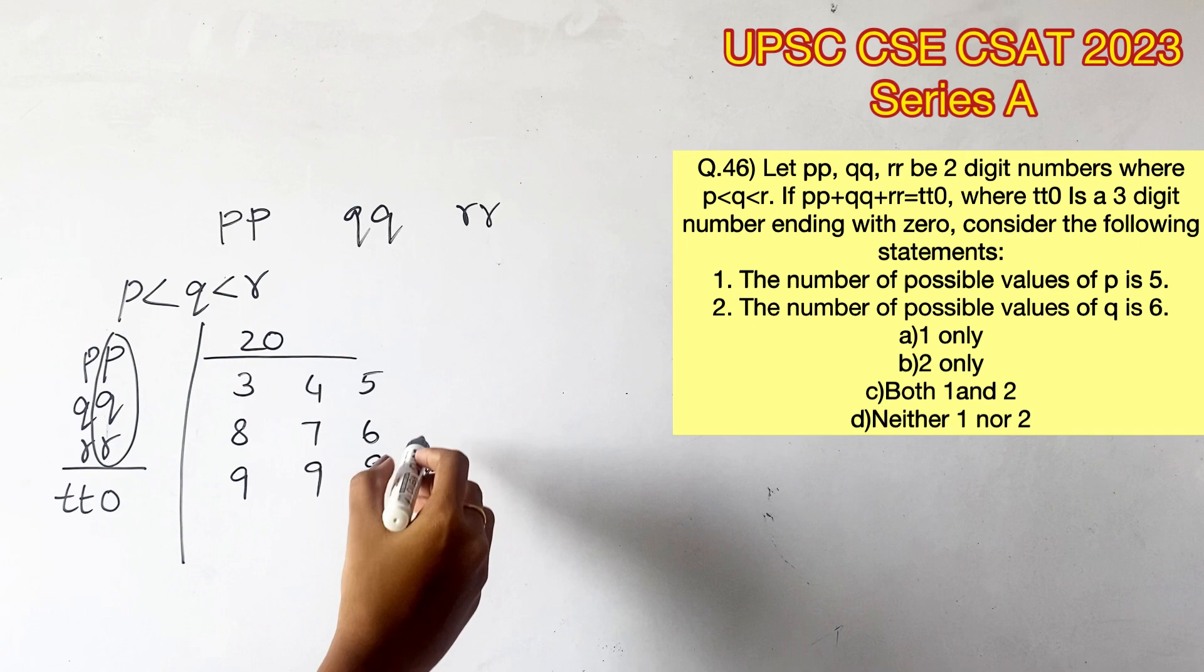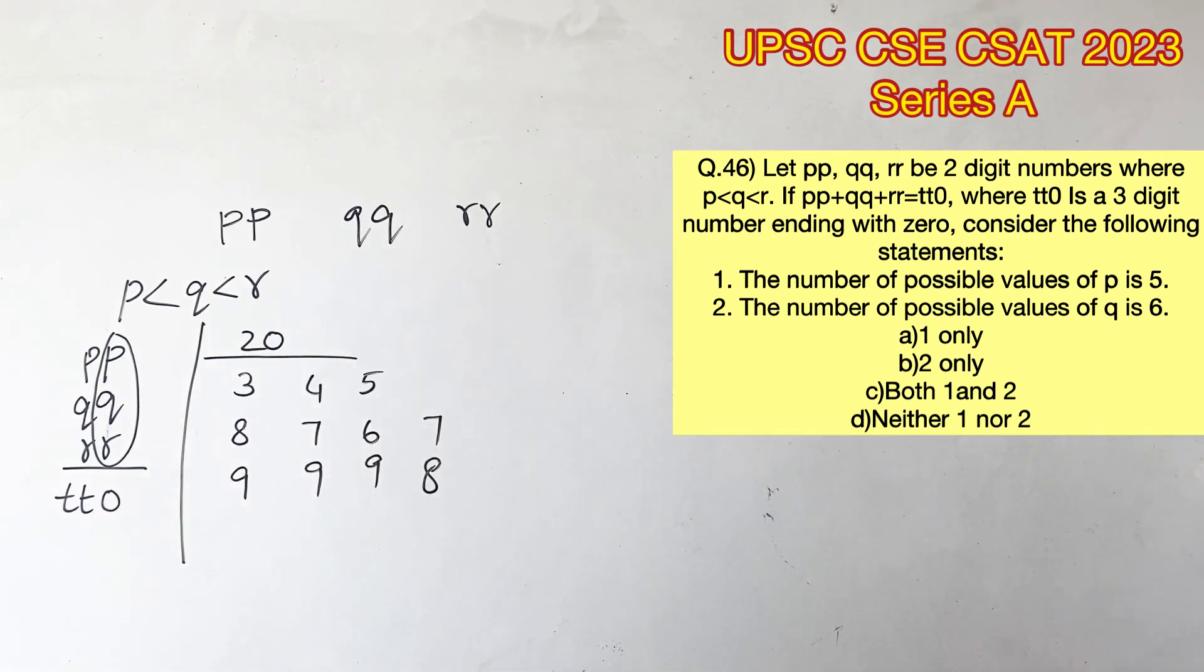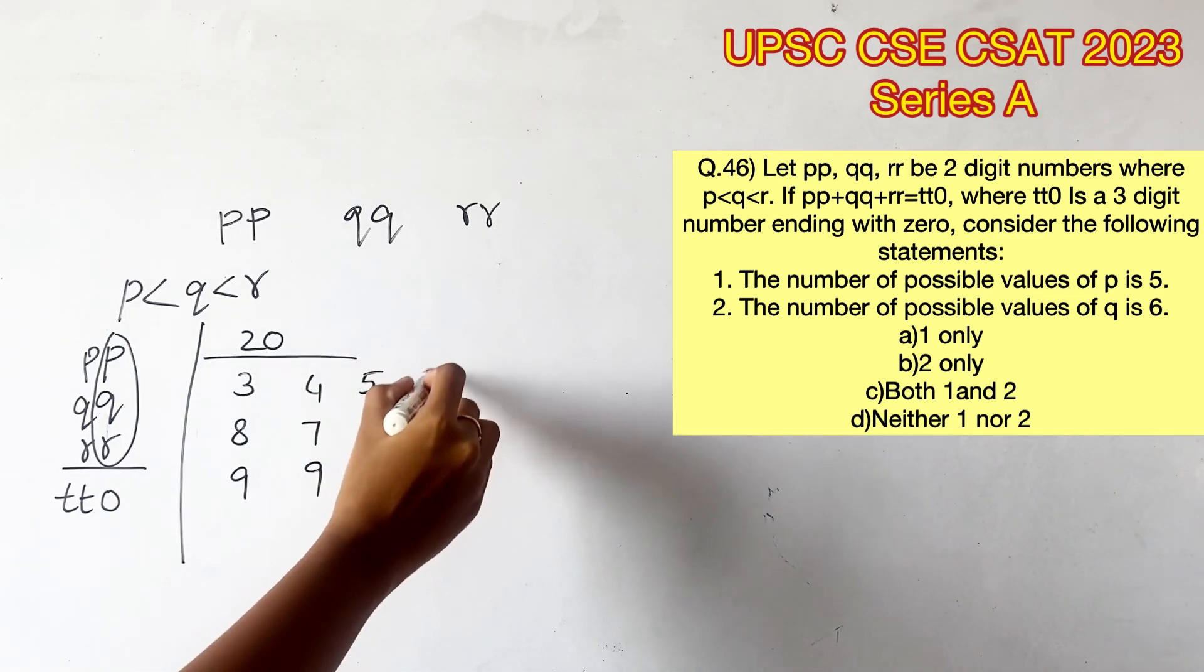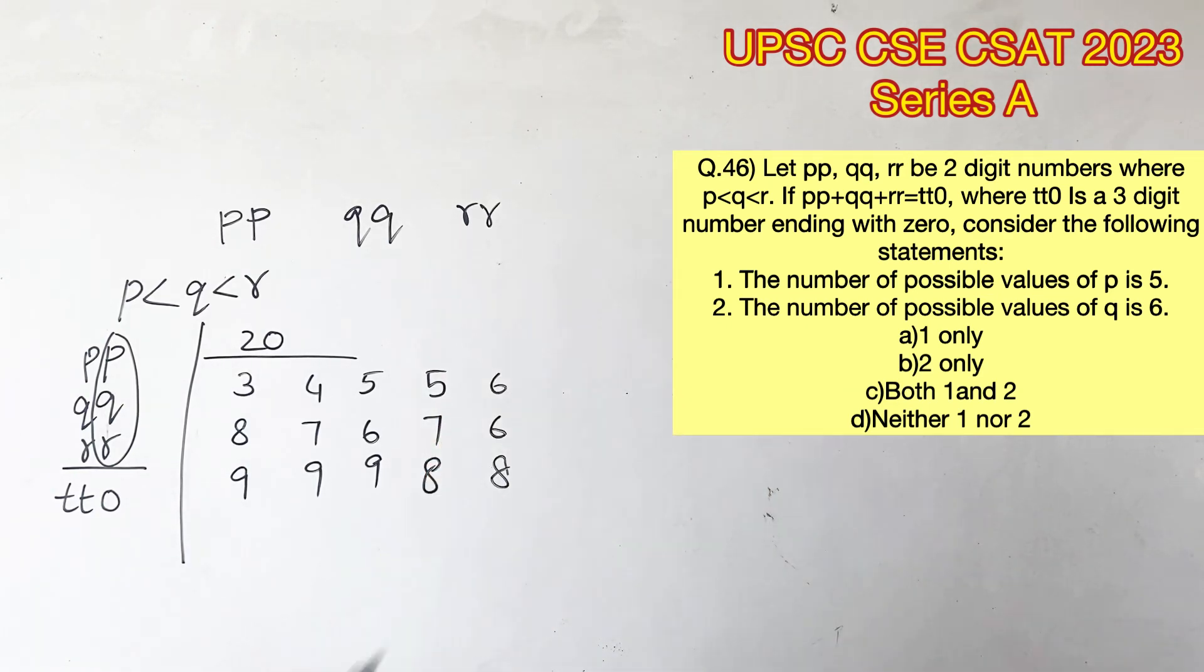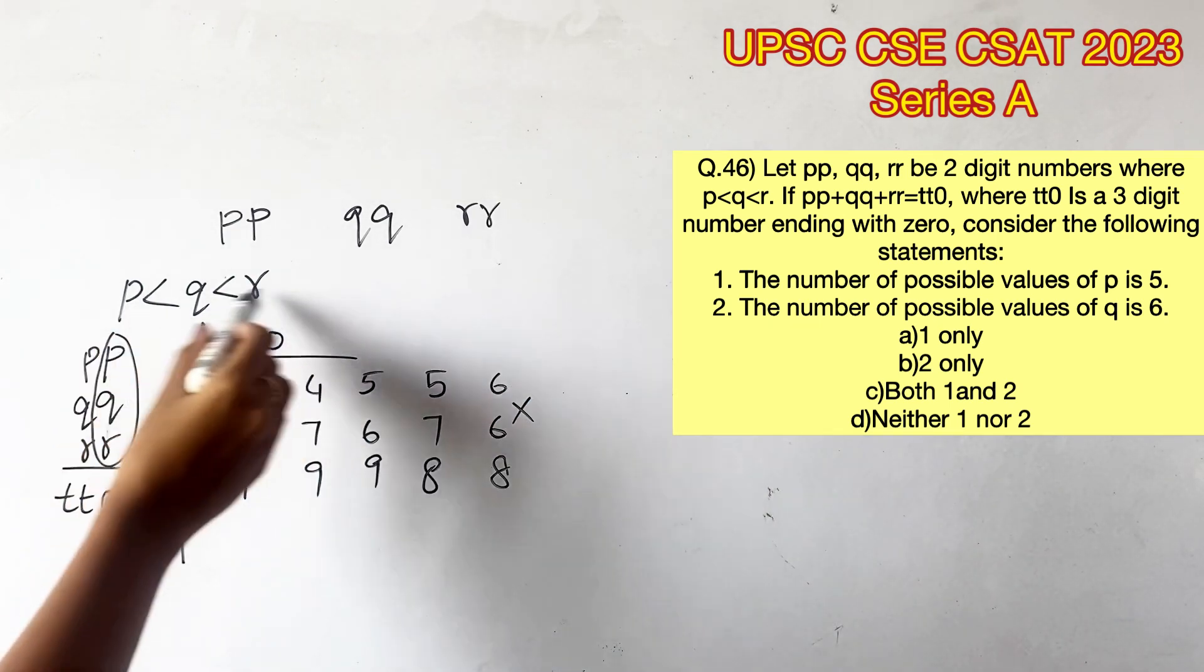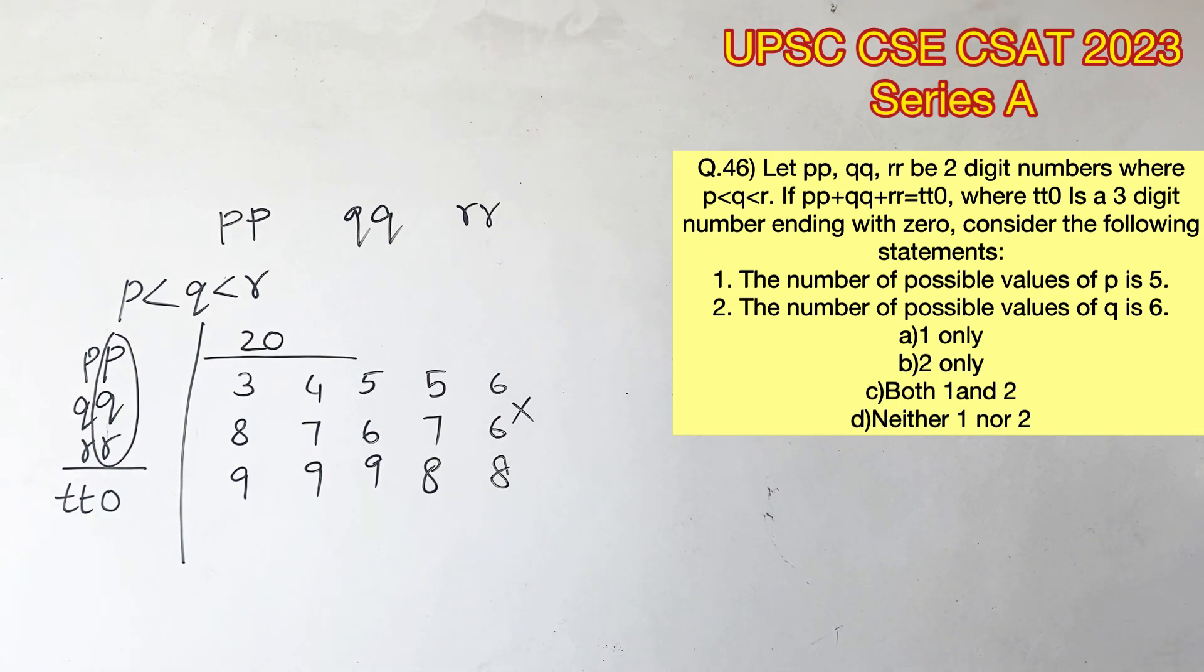If you consider 8 in the place of R and 7 in the place of Q, that will leave us with 5 in the place of P. If we substitute 8 in the place of R, we cannot take 6 in the place of Q because we will have to write one more 6 here that will add up to 20. But that is not possible since we know that P should be lesser than Q.